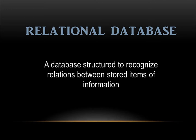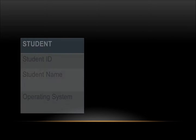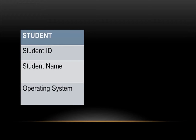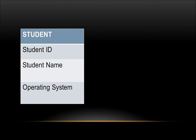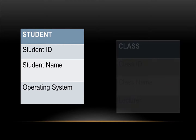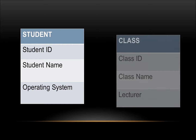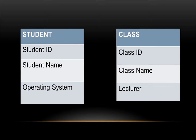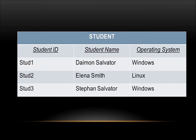By definition, a relational database is a database structured to recognize relations between stored items of information. In this database — one that holds students and class information — information gathered about students would be student ID, student name, and what operating system they use. For classes, we have class ID, class name, and lecturer.